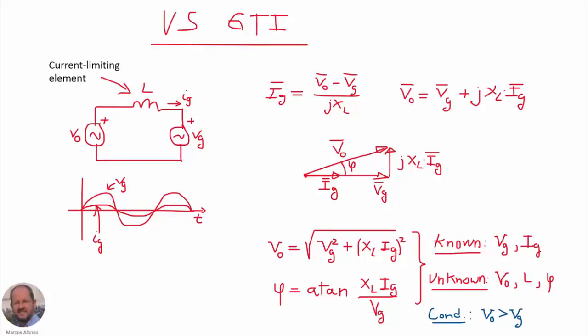In this video, we focus on the voltage source grid-type inverter. Let's see how to inject current into the grid using a voltage source. The inverter behaves like a voltage source at the output, and the grid voltage is another voltage source. We cannot connect them in parallel because the current will not be limited, so we need some element to limit the current. We could use a resistor, a capacitor, or an inductor. A resistor is not a good solution due to losses. The best possibility is to use an inductor, because the inductor will also serve to filter high-frequency harmonics.